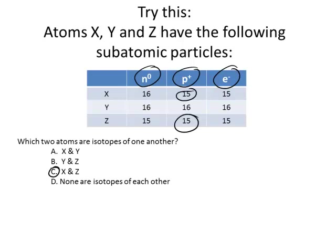Alright, the number of neutrons just tells you which isotope it is. And the number of electrons in this case is balancing, but the number of electrons does not tell you if they're isotopes or not.